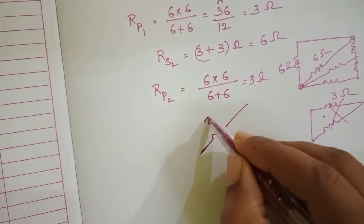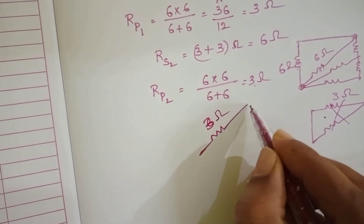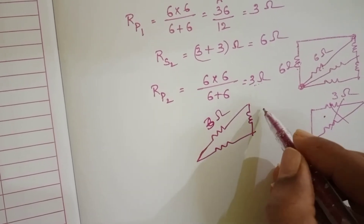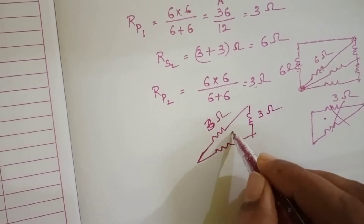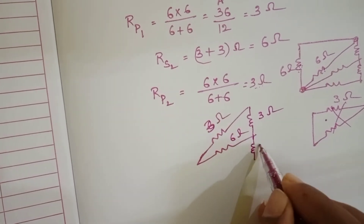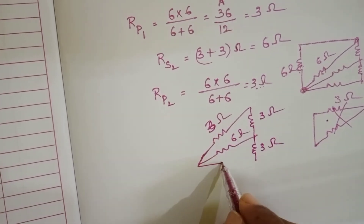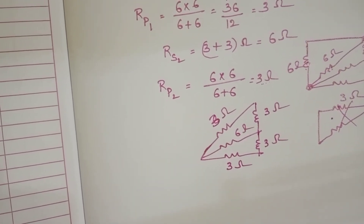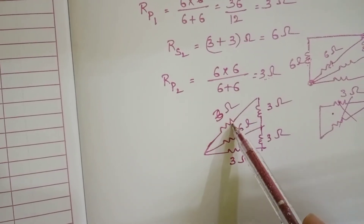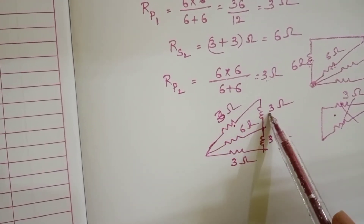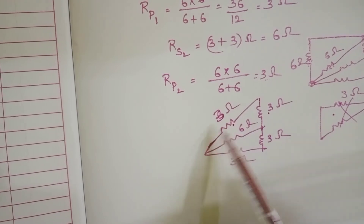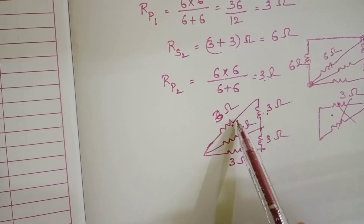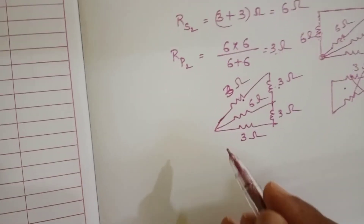So 6 into 6 by 6 plus 6 is equal to 3 ohm. Here this is 3 ohm. So this one is 3 ohm, 6 ohm, 3 ohm, and this part is 3 ohm. This 3 ohm resistor and this 3 ohm resistor are end to end, so the equivalent resistance of these two becomes 6 ohm.